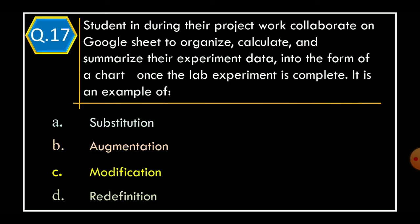Question 17: Students during their project work collaborate on Google Sheets to organize, calculate, and summarize their experiment data into the form of a chart once the lab experiment is complete. This is an example of Option A: Substitution. Option B: Augmentation. Option C: Modification. Option D: Redefinition.